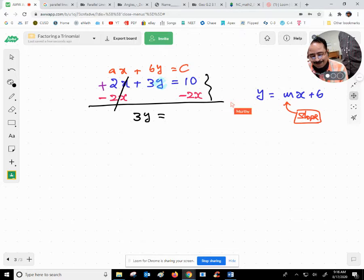Some of you might thought it is 8x, which is not correct, because when you take 10 minus 2x, these two are unlike terms. Be careful.